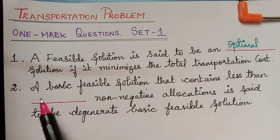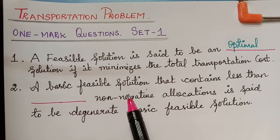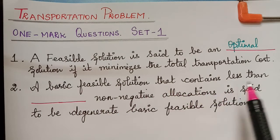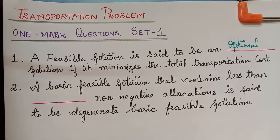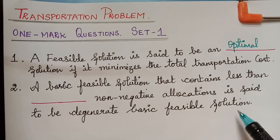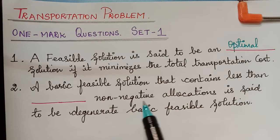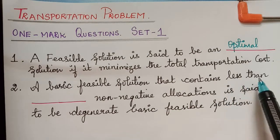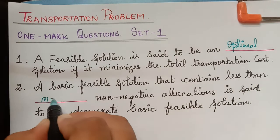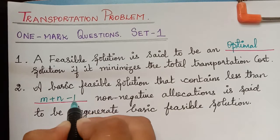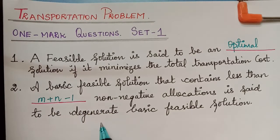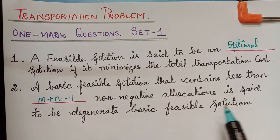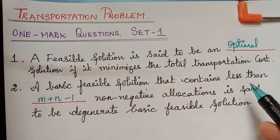The second question is: a basic feasible solution that contains less than dash non-negative allocations is said to be a degenerate basic feasible solution. If the number of allocations is less than m plus n minus 1, then the solution is said to be a degenerate basic feasible solution.